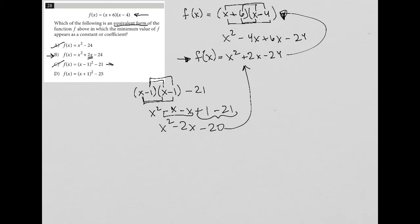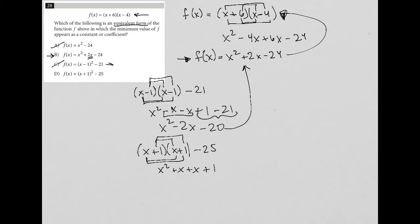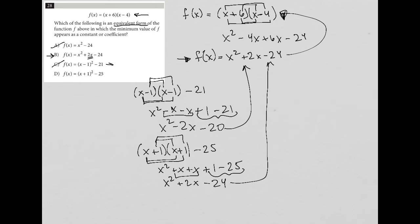Let's try choice D: x plus 1 squared minus 25. That's x plus 1 times x plus 1, minus 25. FOILing gives x squared plus x plus x plus 1, minus 25, which becomes x squared plus 2x minus 24. These are equivalent! So both B and D are equivalent forms — what's missing?